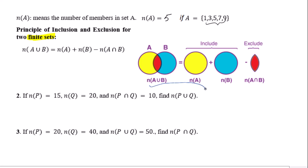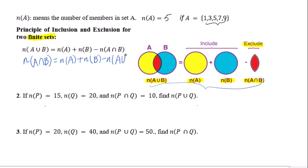This is the diagram for the principle of inclusion and exclusion for two finite sets. From this principle, we can also figure out the number of elements in A∩B: n(A∩B) equals n(A) plus n(B) minus n(A∪B).